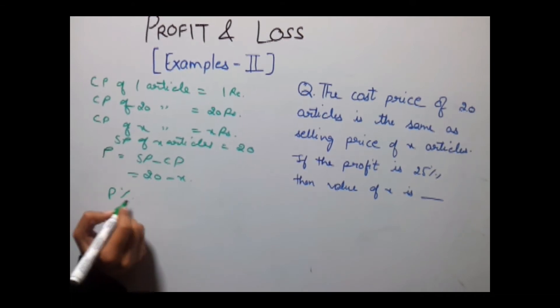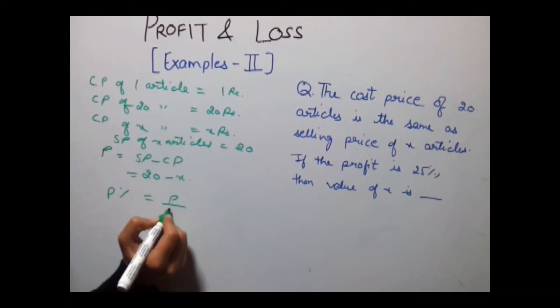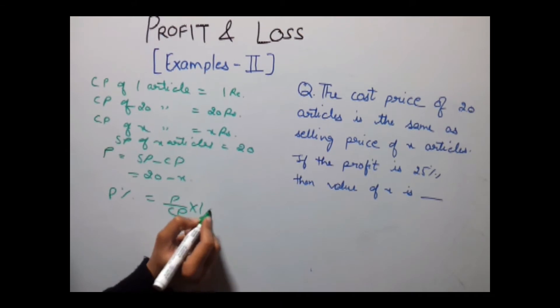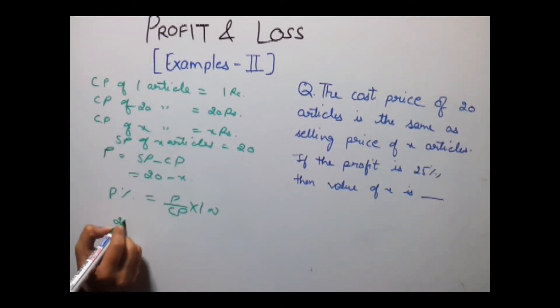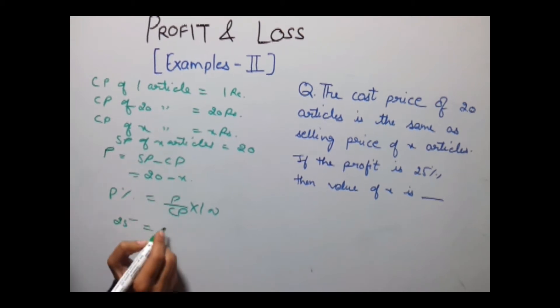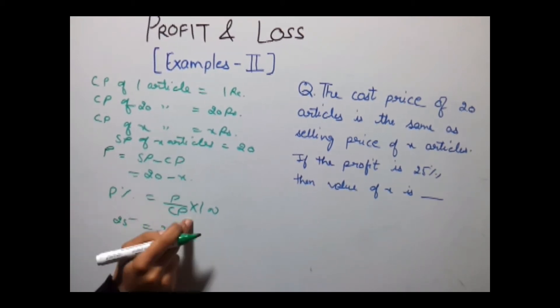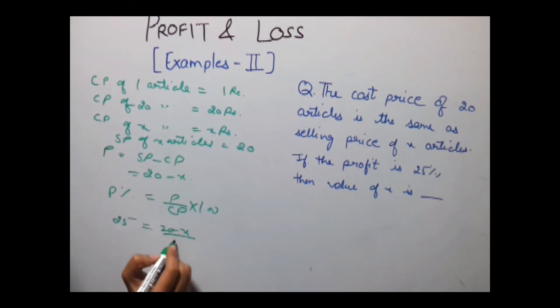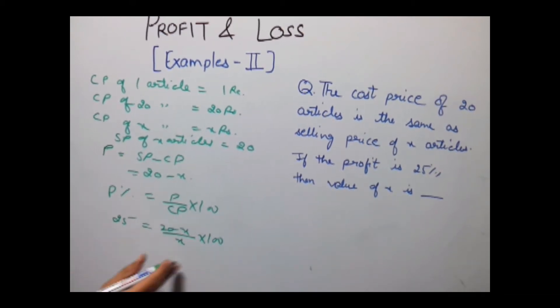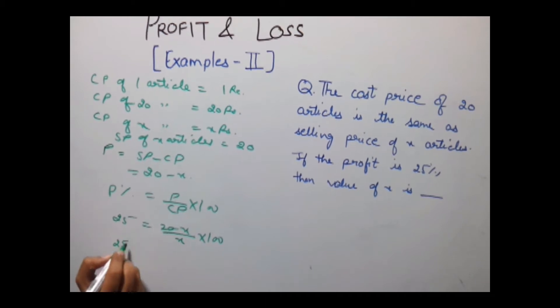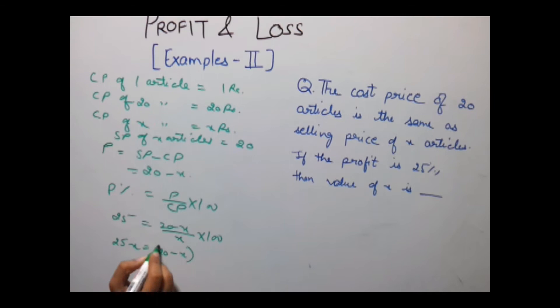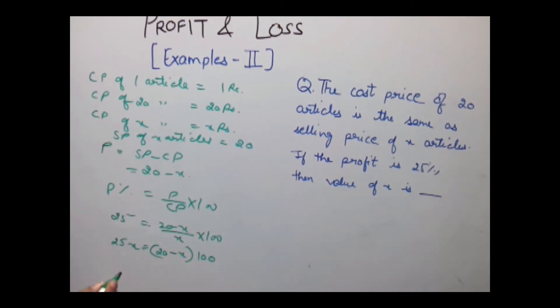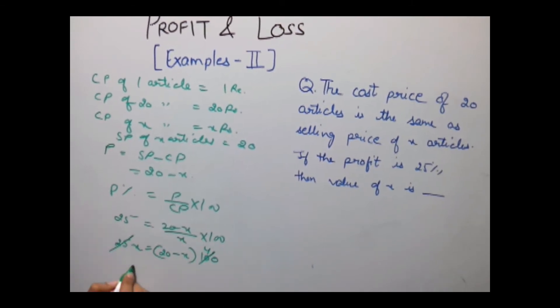Now we have the formula that profit percentage is equal to profit upon CP into 100. Profit percentage is given as 25. Profit is equal to 20 minus x and CP is x. So this is equal to 25 equals (20 minus x) upon x into 100.